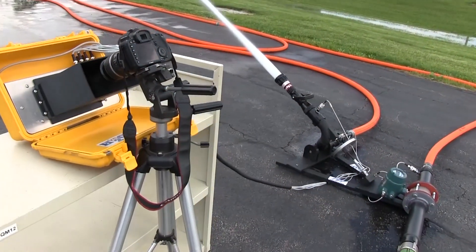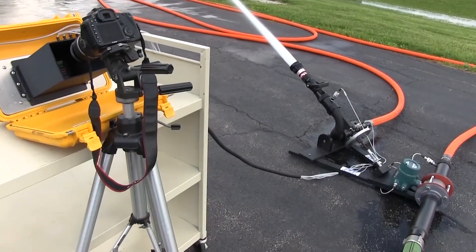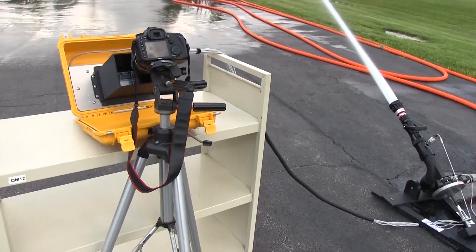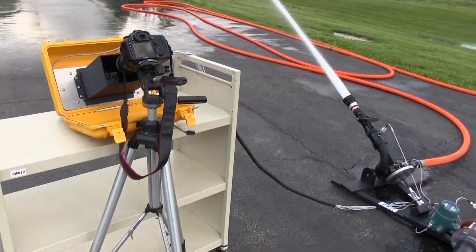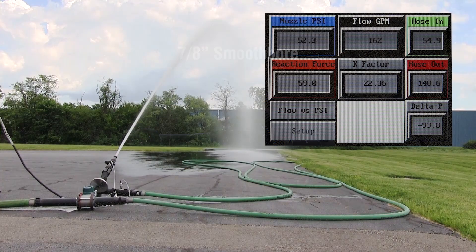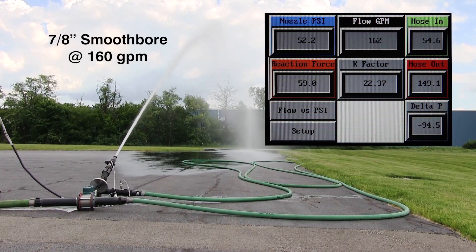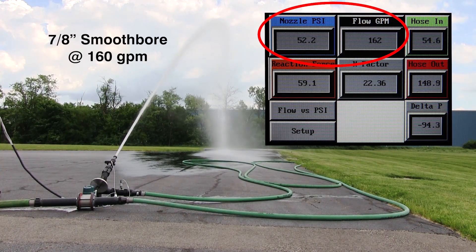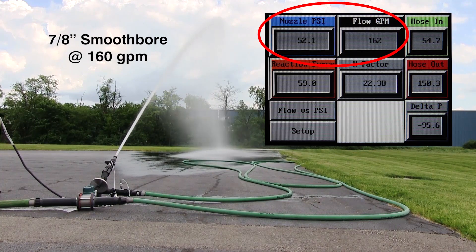Using our flow test device described in our introductory video, we begin by observing flow and pressure data of a 7/8-inch smoothbore flowing at 160 GPM, plus or minus 2 GPM. Our 7/8-inch smoothbore is flowing at about 160 GPM and showing a nozzle pressure of about 50 PSI.